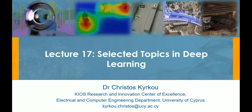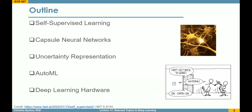The objective of this lecture is to give some flavor on selected topics and recent advancements in active research areas in computer vision and deep learning. We will talk about self-supervised learning and why it is an important emerging area. Then we'll briefly talk about a new idea in deep learning called capsule networks.